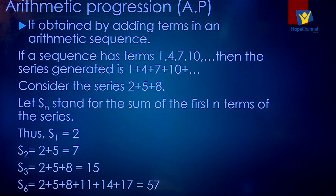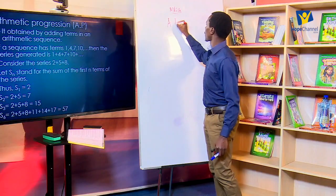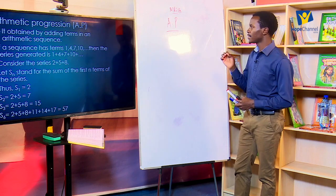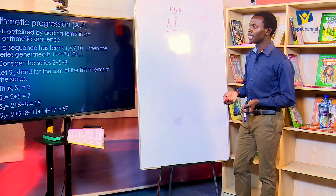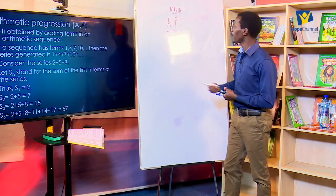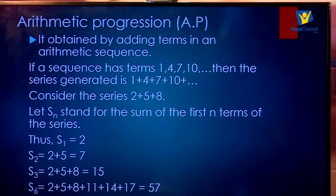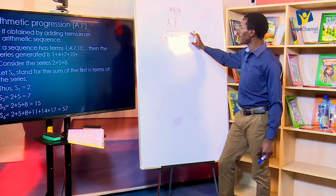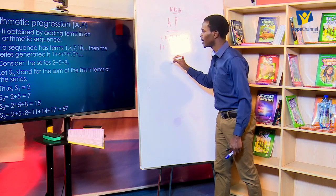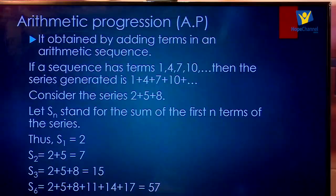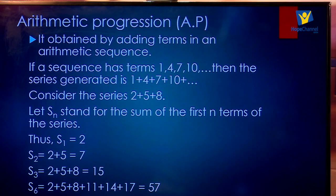We're going to start with arithmetic progression, AP for short. When you see AP or GP in a question, AP means arithmetic progression. It is obtained by adding terms in an arithmetic sequence. For example, the sequence 1, 4, 7, 10 — when separated by commas, this is a sequence. But when you include the addition sign — 1 plus 4 plus 7 plus 10 — this becomes a series. The difference is one has addition signs and the other has only commas.